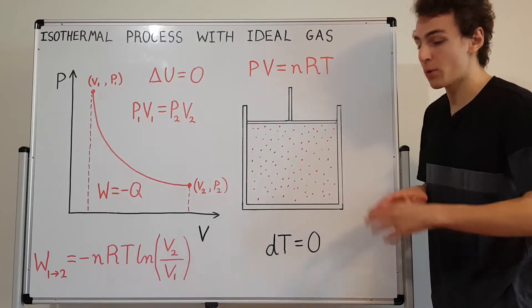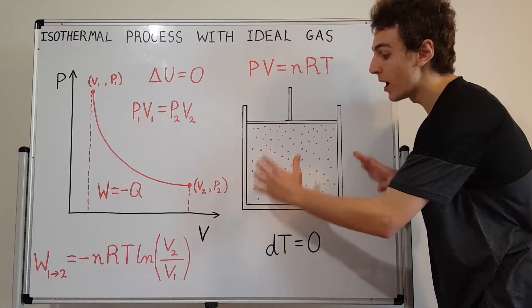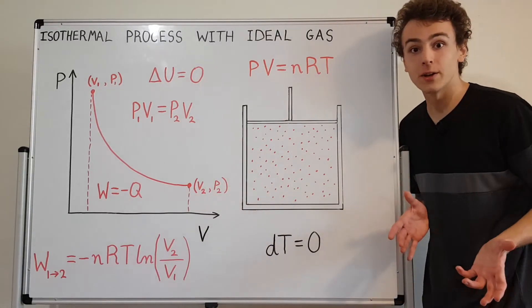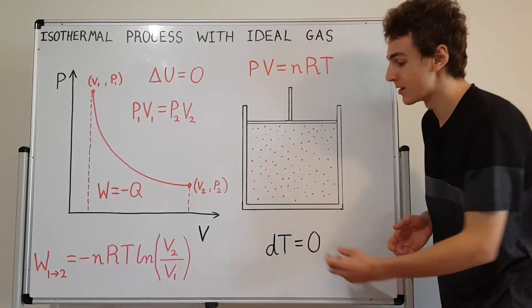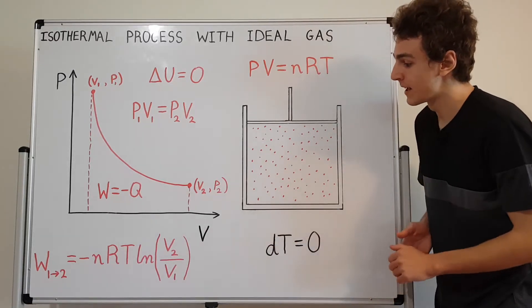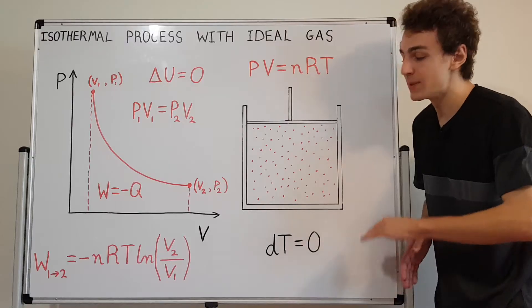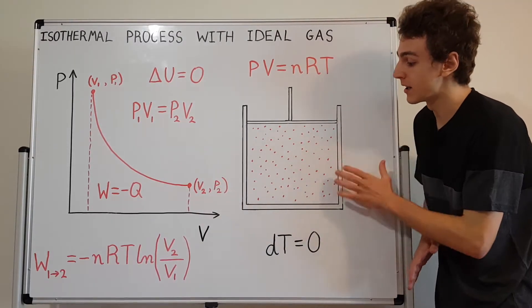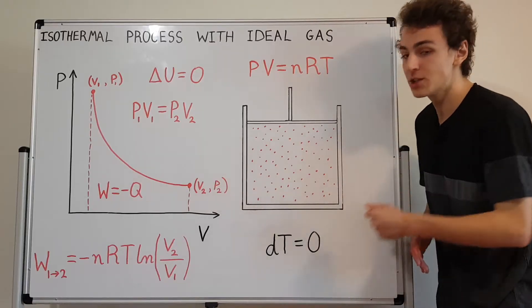A thermal reservoir in practice could be a bath of water that's at a certain temperature. It could also be a refrigerator. It could also be a Bunsen burner or some kind of fire that's heating this up. As long as the temperature is maintained at a constant value, that's actually going to be consistent with our isothermal condition.